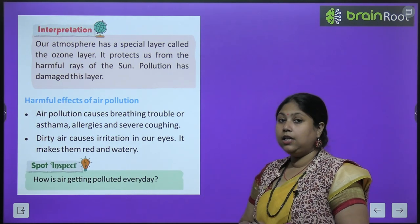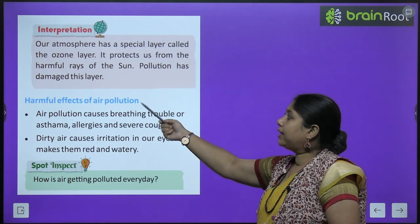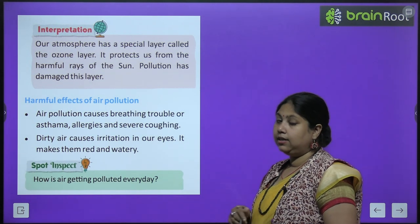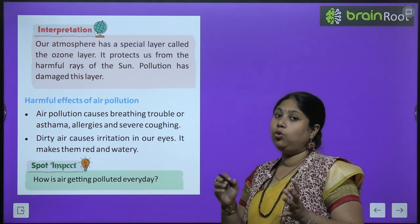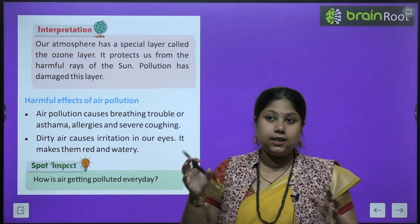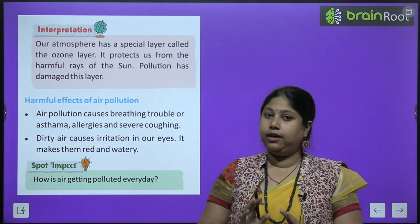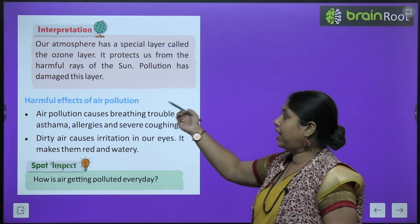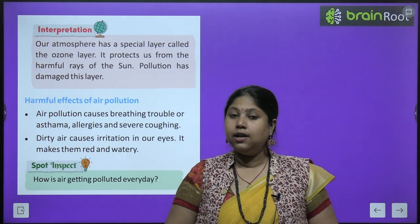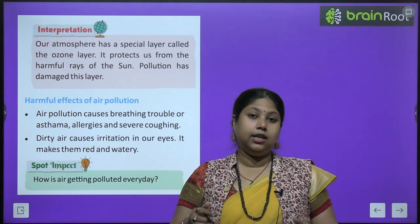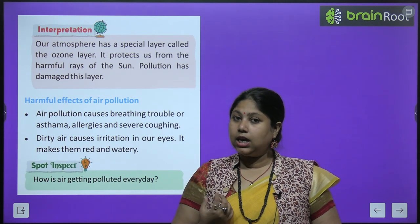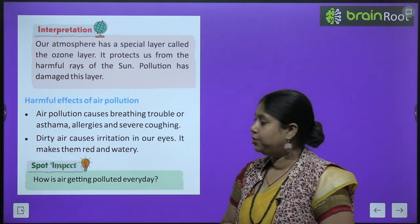A fact: our atmosphere has a special layer called the ozone layer, jo humein sun ke UV rays — yaani sun ki khatarnaak harmful rays — se protect karta hai. Pollution has damaged this layer — pollution dheere dheere is layer ko damage kar raha hai. Aur agar yeh layer completely khatam ho jayegi, toh sun ki jo harmful rays hain voh ruk nahi paayengi aur hum log bimaar par jayenge.